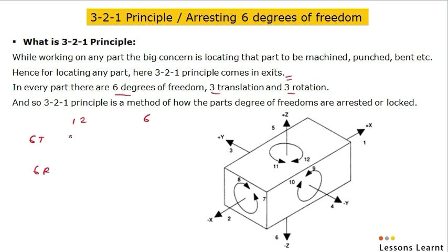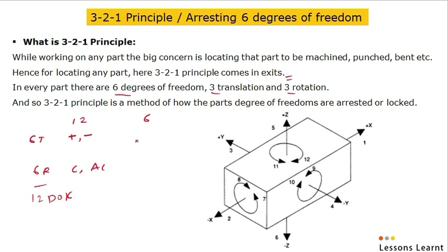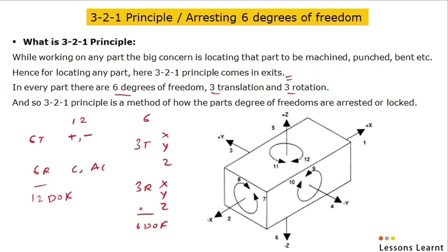In translation, they consider negative and positive coordinates, and in rotation, they consider clockwise and anticlockwise coordinates. So totally there are 12 degrees of freedom by considering positive-negative, clockwise and anticlockwise coordinates. But here, in 6 degrees of freedom, we just consider 3 translation in X, Y and Z and 3 rotation in X, Y and Z. So totally 6 degrees of freedom are considered as the standard degrees of freedom.